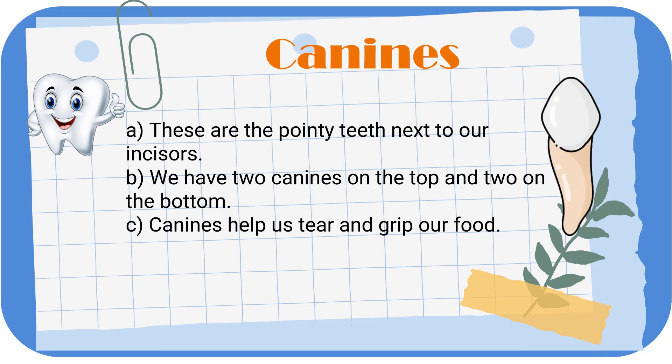Next up is canines. These are pointy teeth next to our incisors. We have two canines on the top and two at the bottom. In totality we have four canine teeth, which help us tear and grip our food.